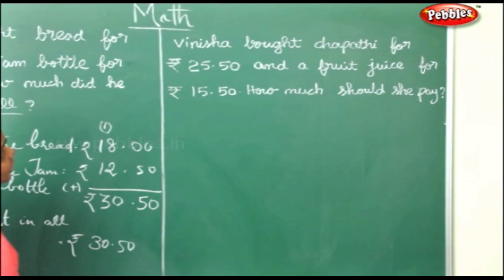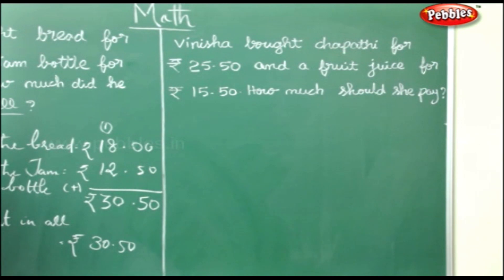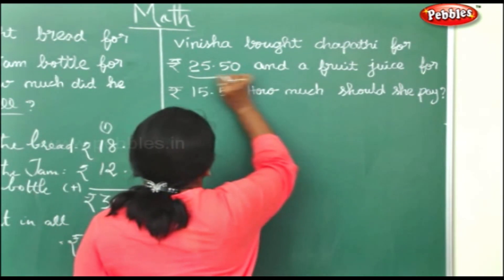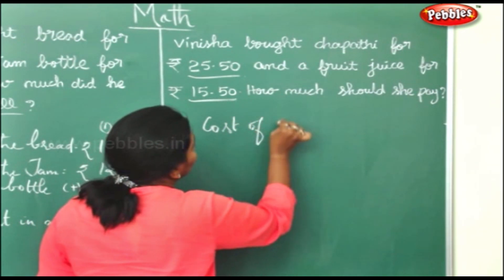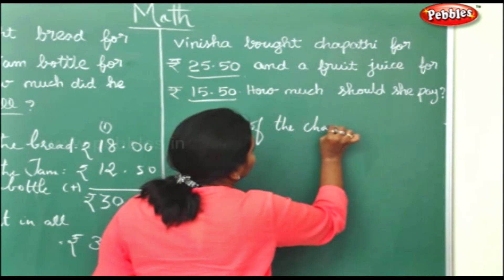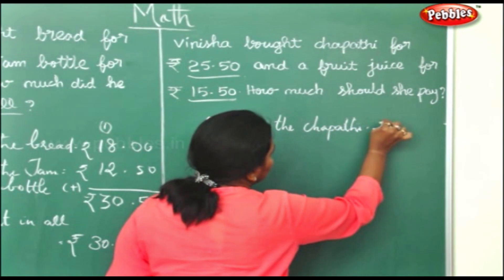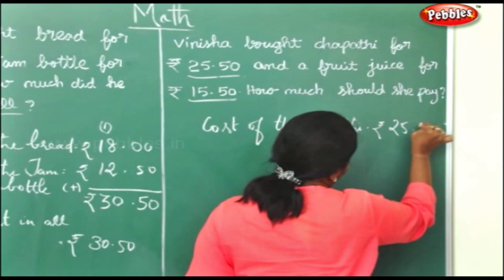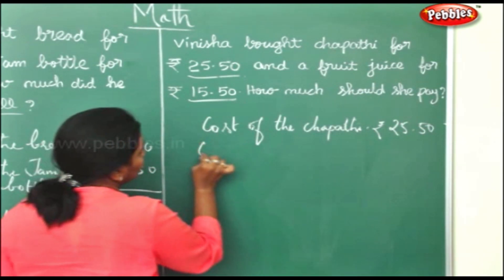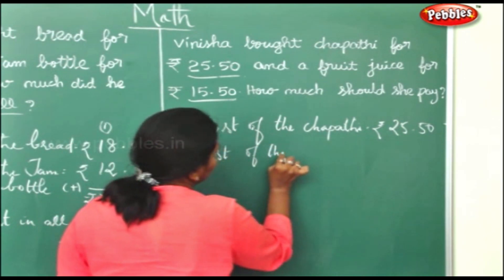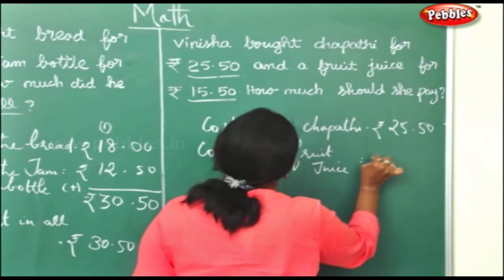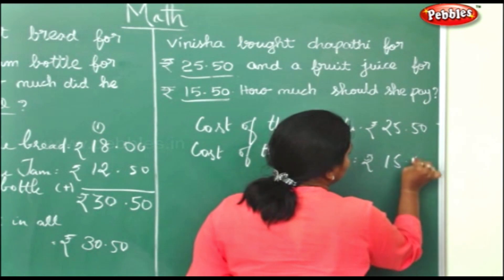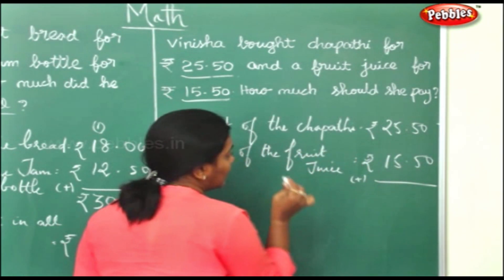Next sum: Venetia bought chapati for rupees 25.50 and fruit juice for rupees 15.50. How much should she pay? This is also addition. Cost of the chapati is rupees 25.50. Cost of the fruit juice is rupees 15.50. So we will add this up to find the amount she has to pay.